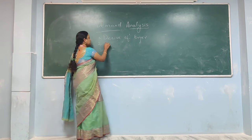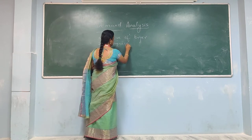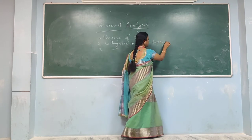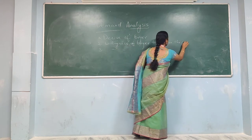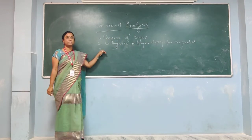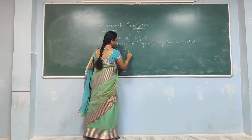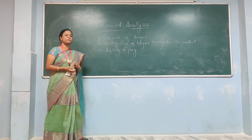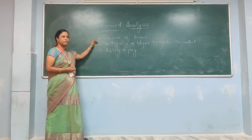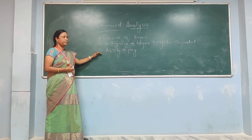The second condition is willingness of the buyer to pay for the product. The third very important one is ability to pay. So a proper demand should consist of these three important conditions: desire of the buyer, willingness of the buyer to pay for the product or service, and ability to pay.